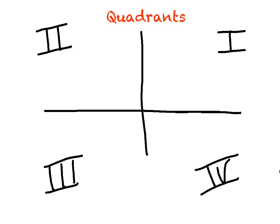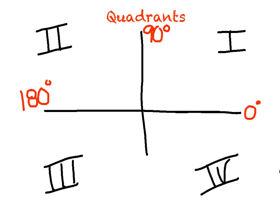Now we're going to label degrees on each of these as well, and we're always going to start right here — label that zero degrees. If I make an angle between this x-axis and y-axis, hopefully you're saying it looks like a right angle, so that represents 90 degrees. Continuing: that's a total of 180 degrees, basically two 90s. Adding another 90 gives 270 degrees. And when I come all the way around, I have four 90s, which total 360 degrees.